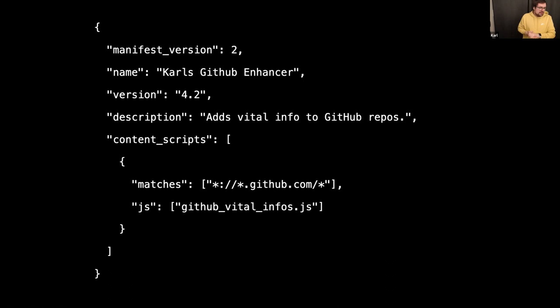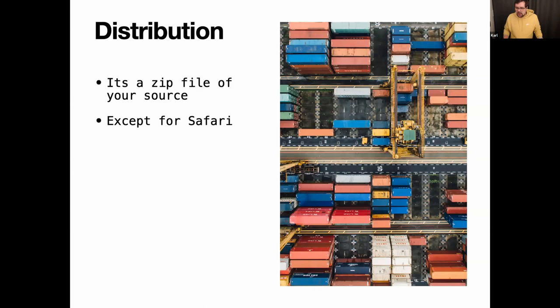We have this manifest.json and some files somewhere — how do we distribute it? It's basically just a zip file. When you upload your extension to the Chrome or Firefox web store or extension gallery, you just upload a zip file. Except for Safari, because that needs to be different — you build a whole app out of it. Luckily, there's an easy command to do that, so we don't have to play around with Xcode.